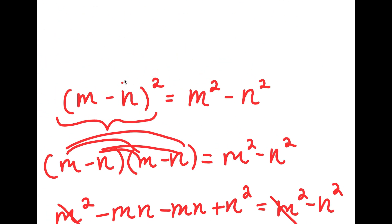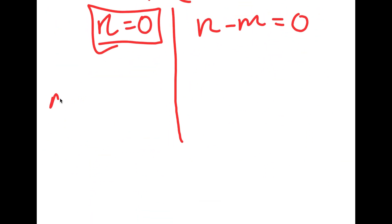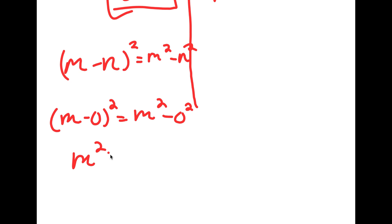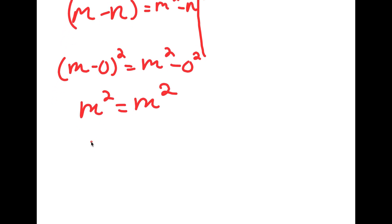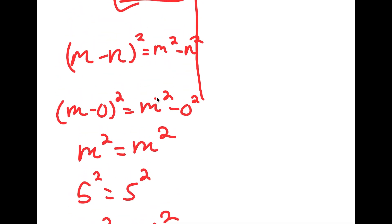Going back to our original equation, we have m minus n squared is equal to m squared minus n squared. If n equals 0, I get m minus 0 squared is equal to m squared minus 0 squared, which turns into m squared is equal to m squared. Meaning m can really equal any number. If m equals 5, then I have 5 squared is equal to 5 squared. If m equals 100, I get 100 squared is equal to 100 squared. So m can equal any number if n is 0.